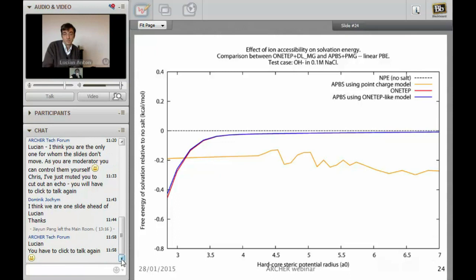APBS has its own way to compute the solvation energy. After I convinced APBS to take in the data from ONETEP, we get a very good agreement. You can see there on the free energy of solvation relative to the pure solvent. The parameter which varies on x is the hard core steric potential. You expect as if you keep the ions far away from the molecules to be no effects from the Poisson equation, so you expect these things to go towards zero, the difference between the pure solvent with no salt and solvent with some molar concentrations.